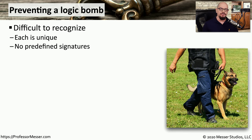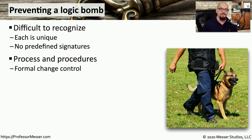As mentioned earlier, it's difficult to know when someone may have installed a logic bomb because there's no known signature to alert you that something has been identified as a logic bomb. But there are things you can do with your processes and procedures to help prevent a logic bomb from being installed in the first place. A good example is to have a formal set of processes and controls for any changes made in the environment. That way, if you notice that something has been modified on a server but there were no plans or processes in place to make those changes, that might be suspicious and might cause you to do more research into what changed on that system.